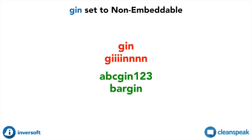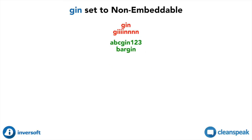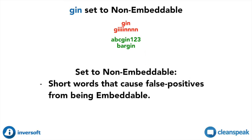Also, if gin were set to Embeddable, misspellings like bargain would generate a match because bar is in the dictionary and embedded next to gin. Set an entry to Non-Embeddable when it's a short word that is problematic to set to Embeddable because Embeddable creates too many matches.